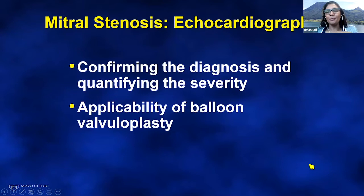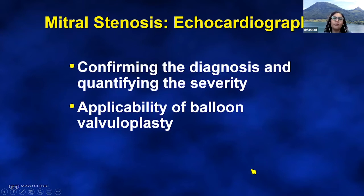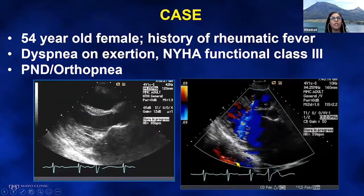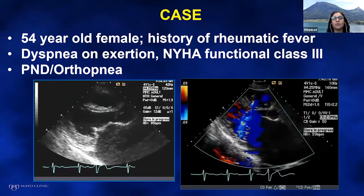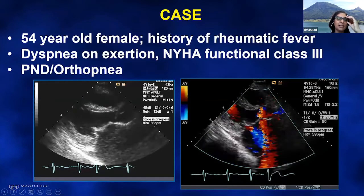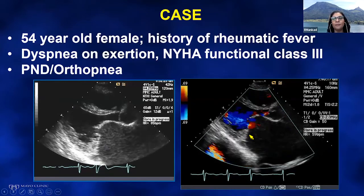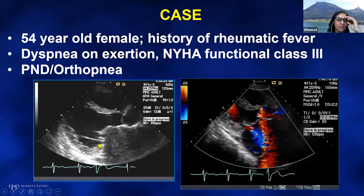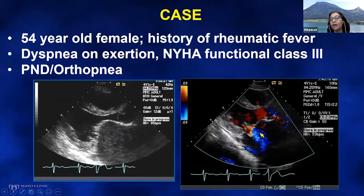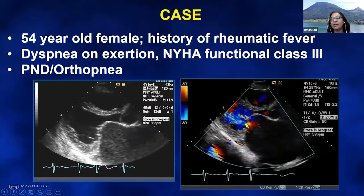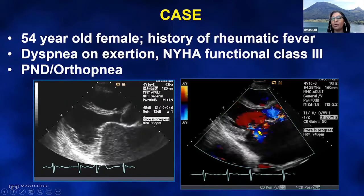Echocardiography is the mainstay in mitral stenosis evaluation — for making the diagnosis, quantifying severity, and determining whether a patient is a candidate for balloon valvuloplasty. Here's a case: a 54-year-old female with known rheumatic fever presenting with dyspnea on exertion, class 3 symptoms, PND and orthopnea. Here we have the parasternal long axis view showing the classic appearance of the mitral valve in rheumatic heart disease — this doming, the hockey stick appearance. By color on diastole, we can see flow acceleration because of the obstruction to filling.